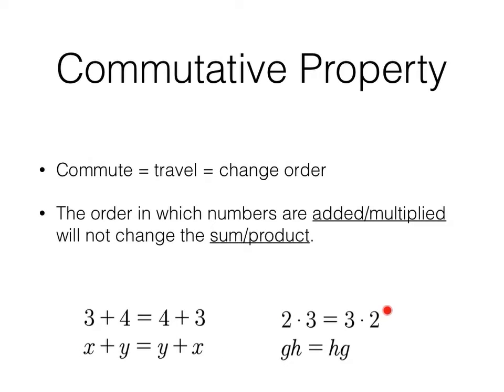And then multiplication. 2 times 3, 3 times 2, g times h, h times g. So commutative property. Notice the lack of an n in the word commutative. While I don't grade you on spelling, I will remind you of the correct spelling as we go along.